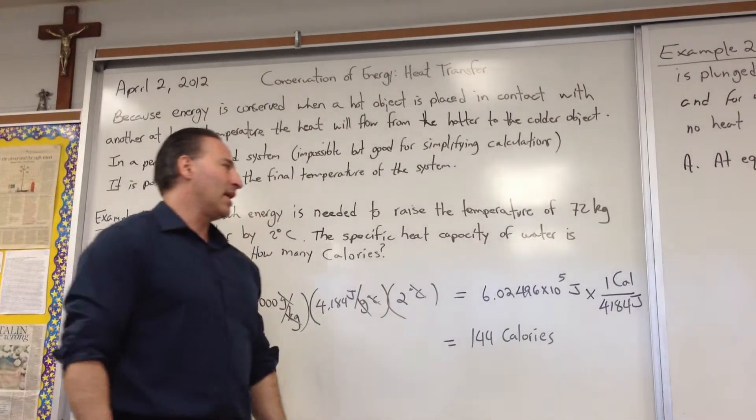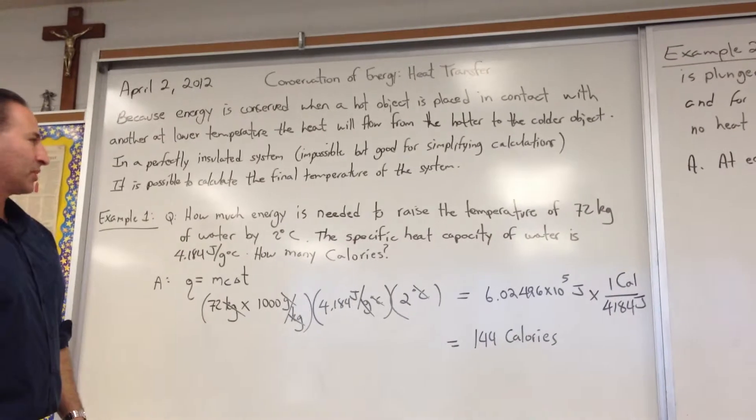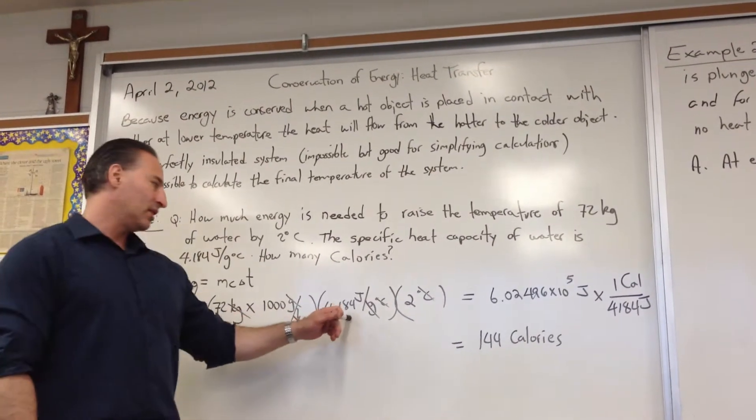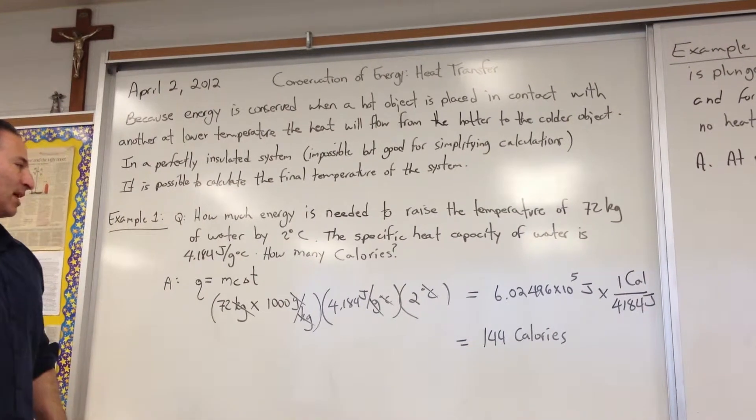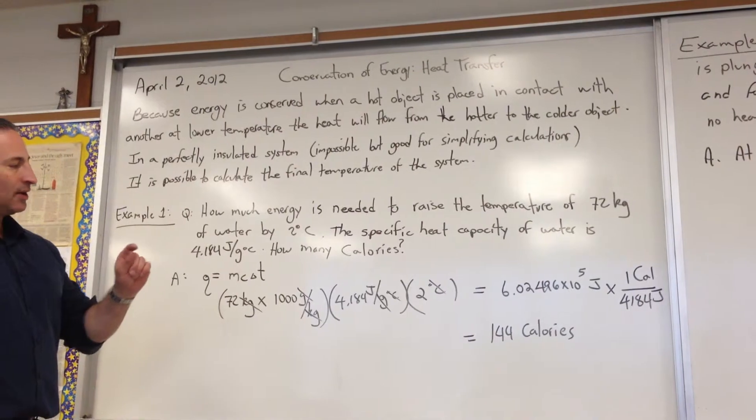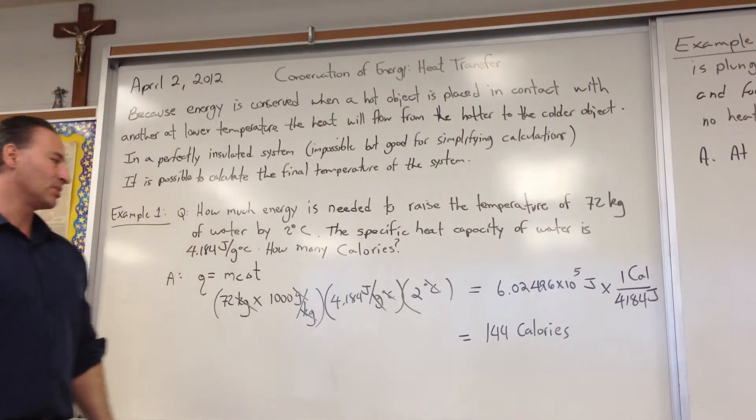But we're going to calculate it first in joules and then convert it to calories. So a 100 kilogram man, we'll assume, has about 72 kilograms of water in his body. And that's what we're going to use as the basis of our calculation. The heat capacity of water is known to be 4.184 joules per gram degree Celsius, meaning that to raise the temperature of 1 gram of water by 1 degree Celsius requires the input of 4.184 joules of energy.